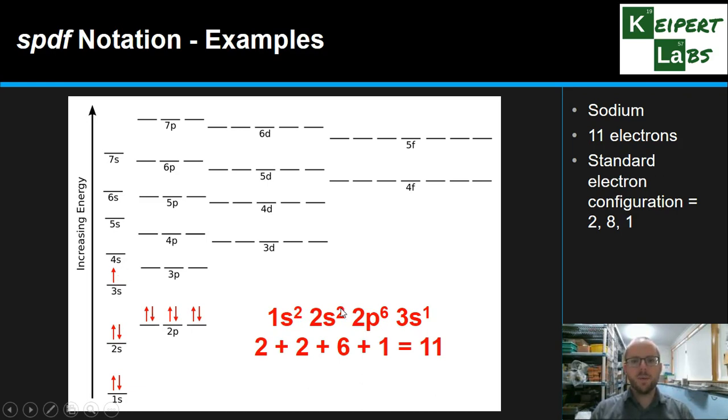Now if you look at the numbers that we have here, the 2, 2, 6, and 1, if we add those together, we get 11, which is consistent with what we know. But now we have this extra information that helps us to describe where those electrons are. It also helps, you know, there's a lot of things further down the track that this can help us to explain by knowing exactly where things are.